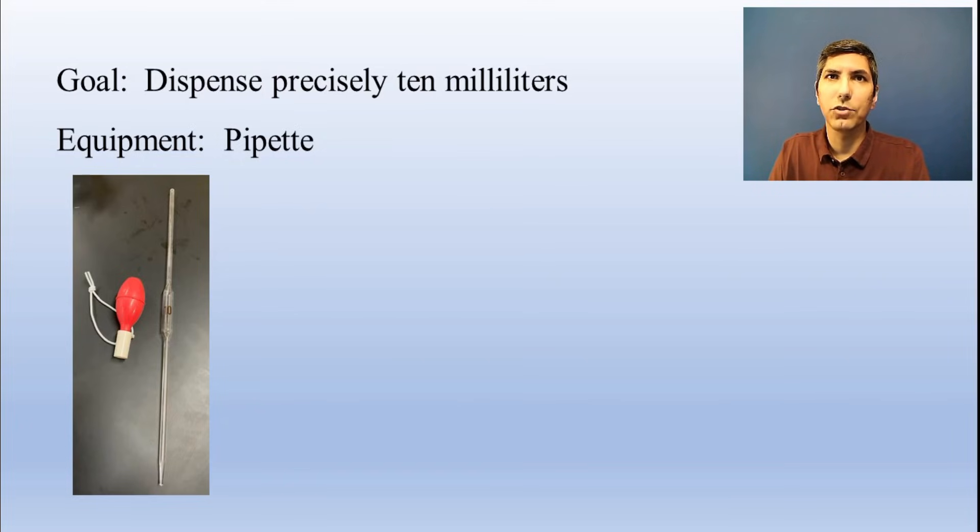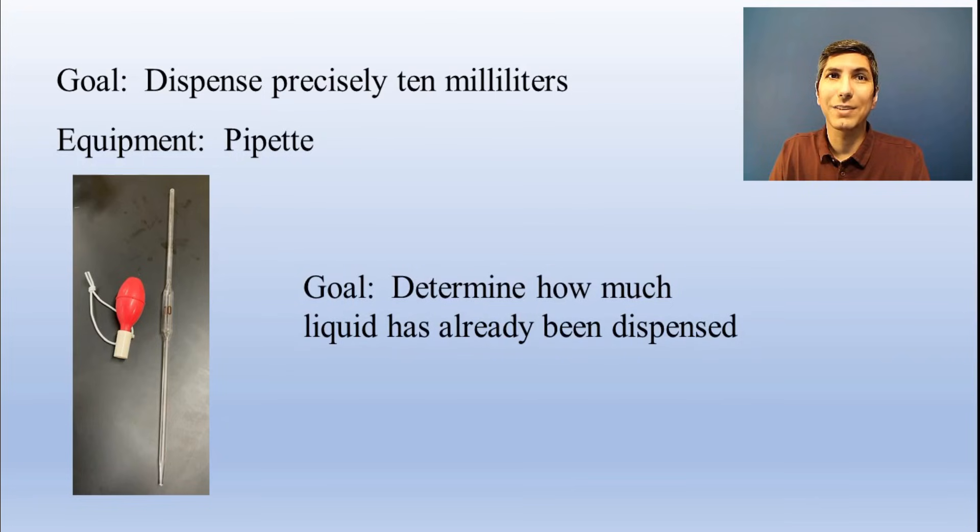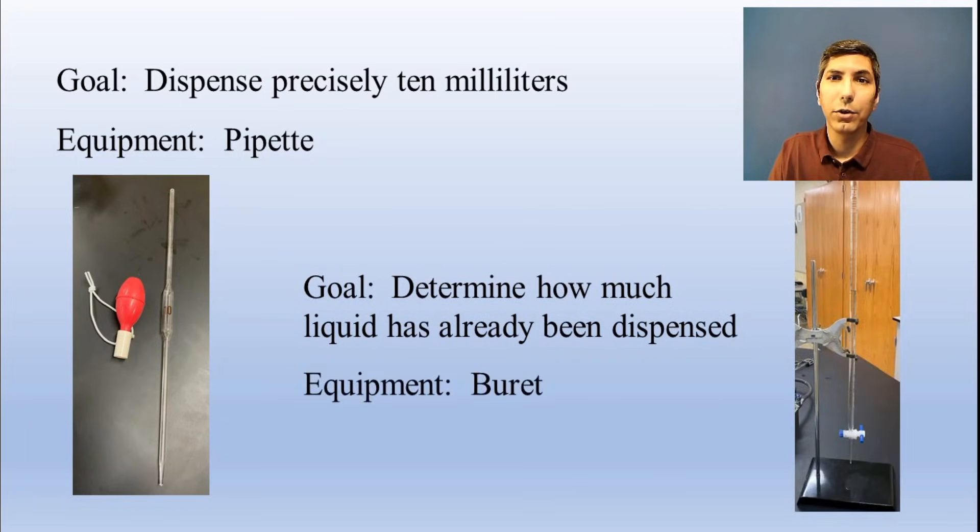If you're dispensing a solution and then need to measure precisely how much volume has been dispensed after the fact, you use a burette. Most of the time, we use a burette for measuring how much solution has been dispensed in a titration. Notice that zero on a burette is at the top. So if you're new at using one, it almost feels like you're reading it backwards.